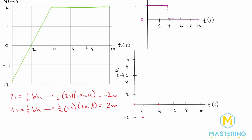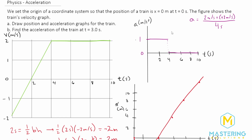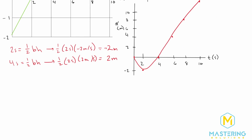Every two seconds we're going to be going up four meters. From the starting point at four seconds we go up four to get to six seconds, then up to eight at eight seconds, and from eight to ten we go up four more to twelve. Connecting the dots gives us our position versus time graph. For part b they want the acceleration of the train at t equals three seconds. Looking at the acceleration versus time graph at three seconds we go up and it is one meter per second squared. So the acceleration at three seconds equals positive one meter per second squared.